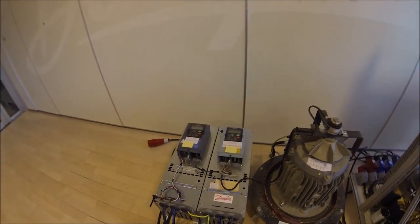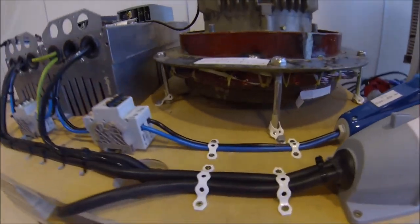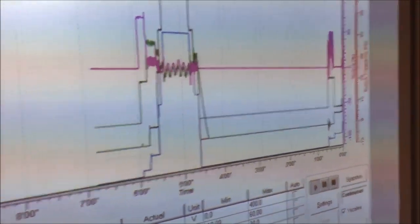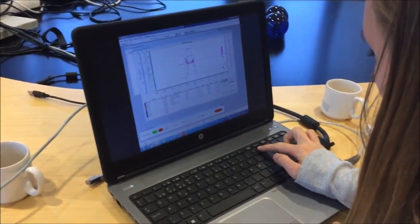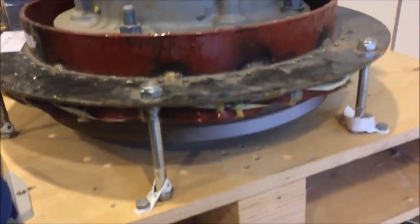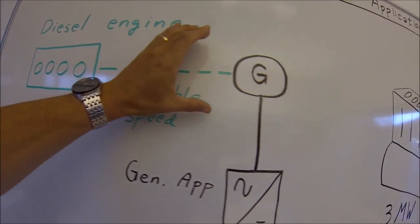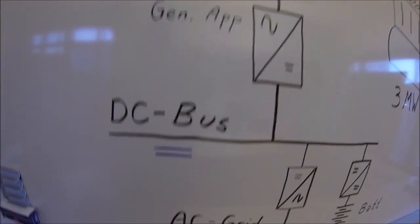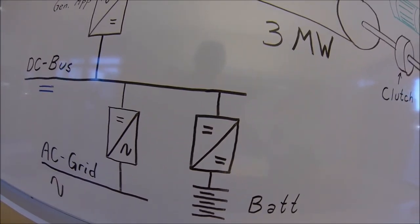Today we are going to look further into the shaft generator. It's a regular frequency converter with special software which in this case handles a permanent magnet motor. Typical usage is between a diesel engine and a generator, which can be a synchronous or asynchronous machine. On the grid side is the DC bus, which can be connected to the AC grid and even to energy storage.